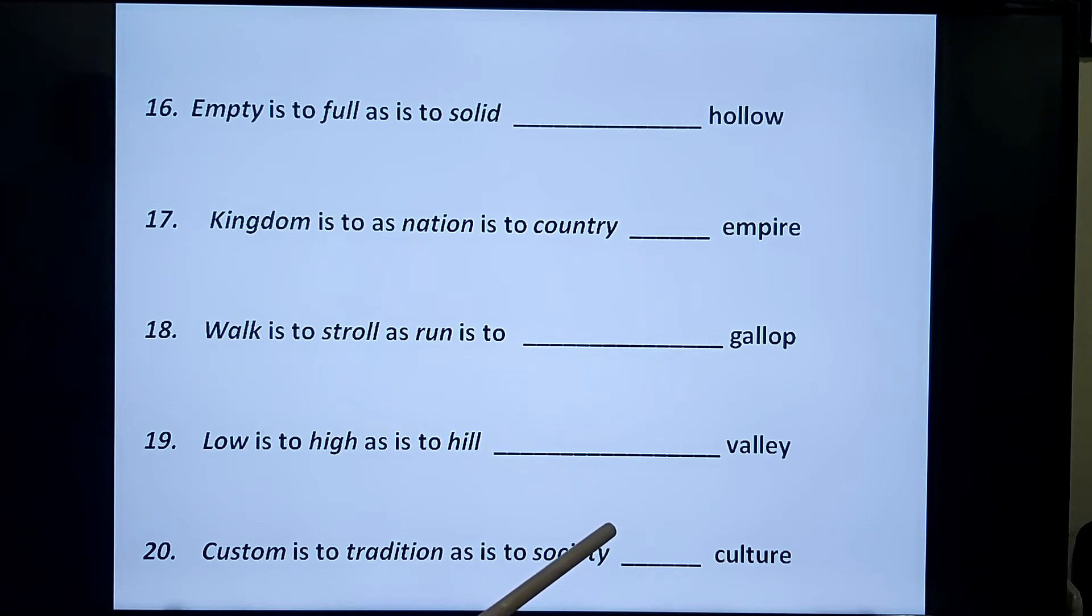Seventeen: kingdom is to nation as country is to empire. Kingdom, empire, nation, country. It's quite a similar analogy that you can detect or think for yourself.